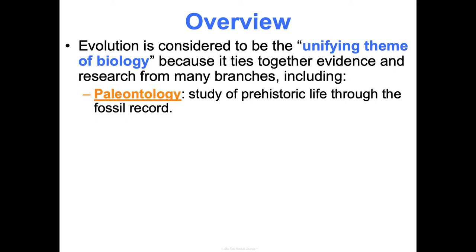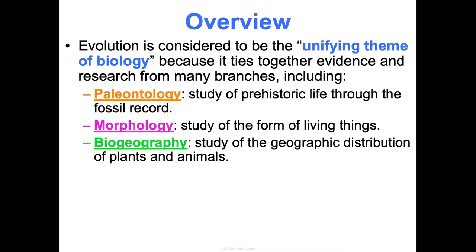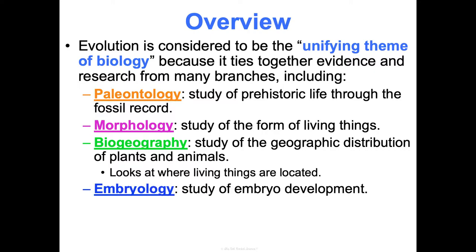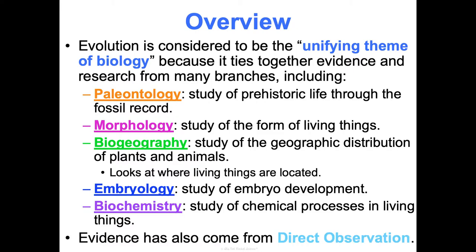We'll look at paleontology, which is the study of prehistoric life through the fossil record. We'll look at morphology, or anatomy, which is the study of the form of living things — structures and similarities. Biogeography is the study of the geographic distribution of plants and animals — essentially, where living things are located. Embryology is the study of embryo development. And biochemistry is the study of chemical processes in living things. We'll also look at evidence from direct observation — things that can be seen and witnessed in our lifetime.